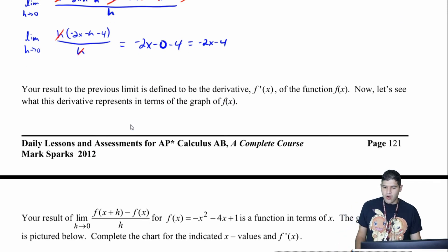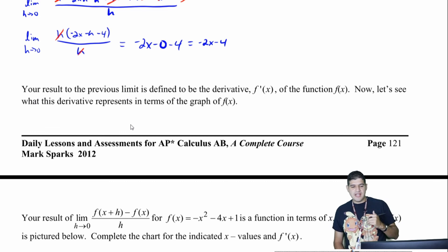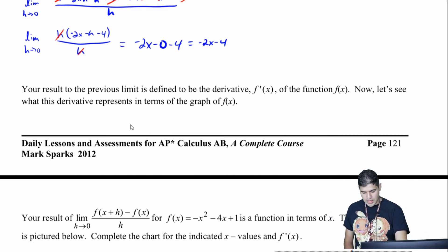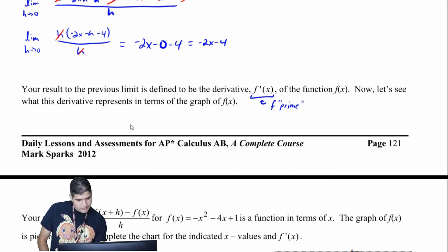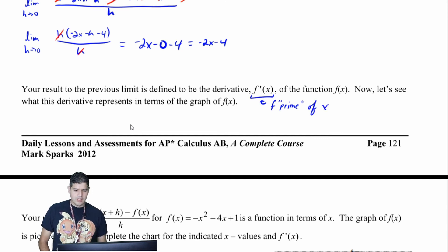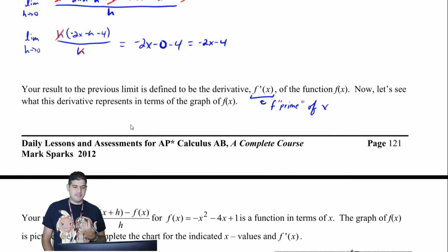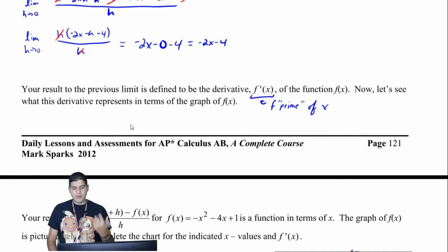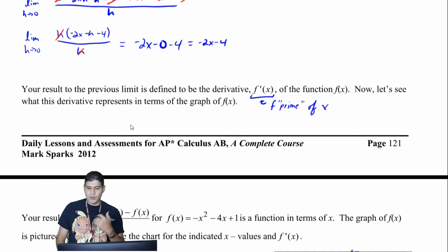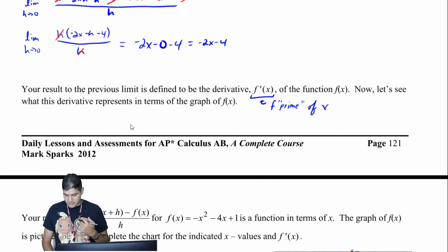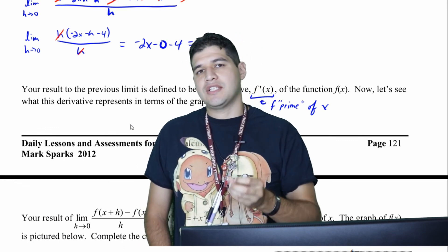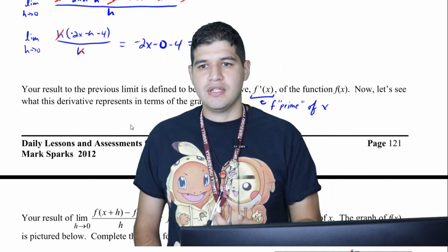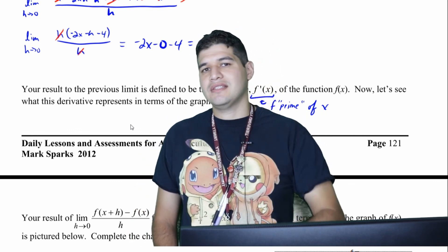So negative two x minus four is our result. What do we call that result? What we just found is called the derivative. The way we denote it is f prime of x, so f prime of x equals negative two x minus four — that's the derivative of f of x. In the next video we're going to see what this derivative represents in terms of the graph of f of x, really diving into that graph to understand what the limit is doing with h so you can build your concept of the derivative. If you need any help, I'm Mr. Hernandez and this was Mr. Hernandez Teaches.